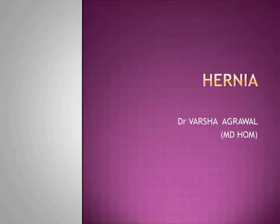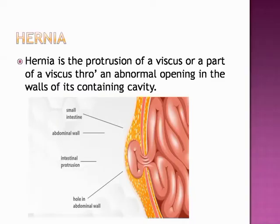Hello students, today we are going to start with a new topic: hernia. Hernia is the protrusion of a viscus or a part of a viscus through an abnormal opening in the walls of its containing cavity. There is an opening in the wall causing hernia. Here you can see the coils of intestine and the abdominal wall, with a weak spot through which the coils of intestine are coming out, leading to hernia.